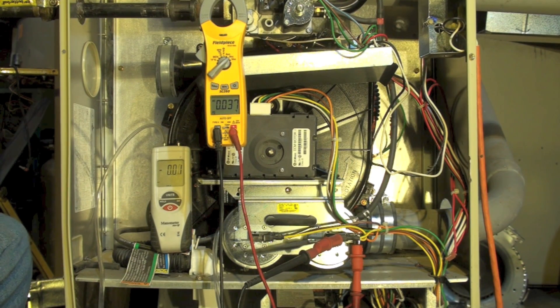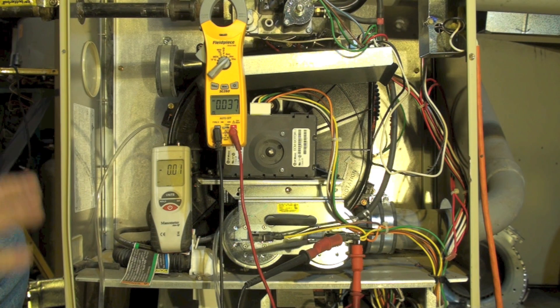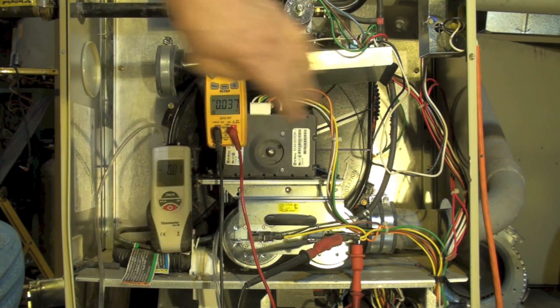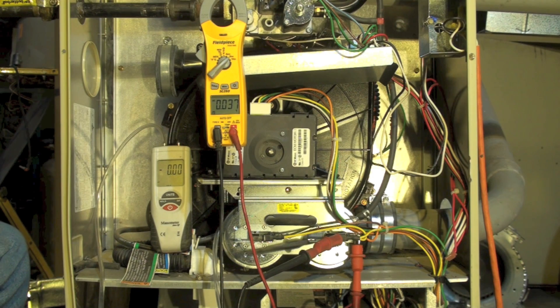Okay, this is a Bryant 355 MAV and what I'm going to go through today is we're going to talk about how this variable speed inducer works and how it comes up to speed, makes the pressure switch, and adjusts down.